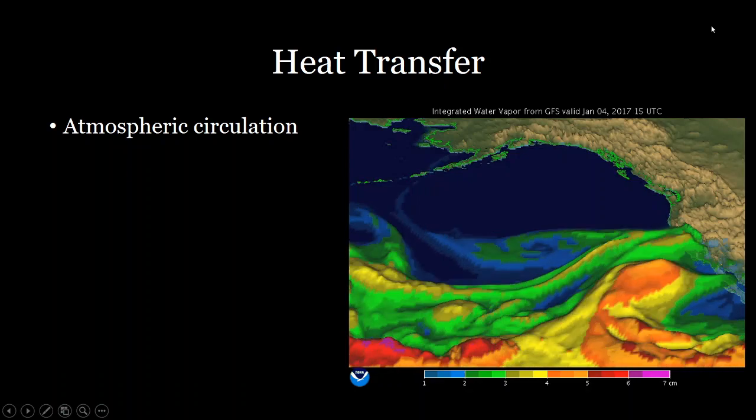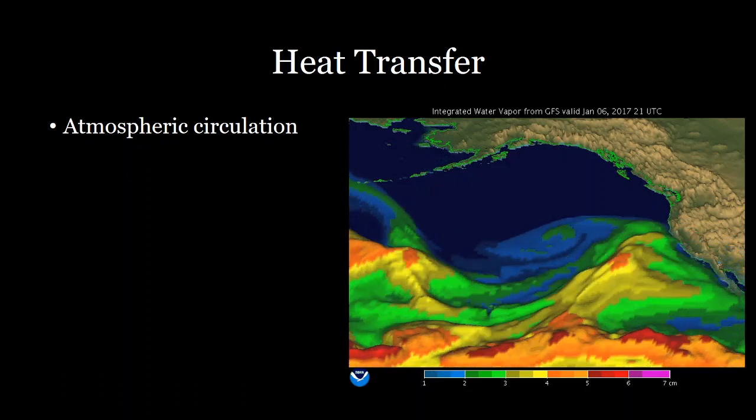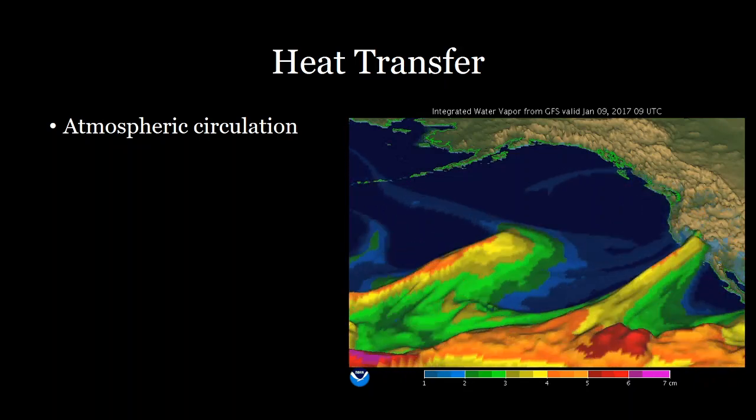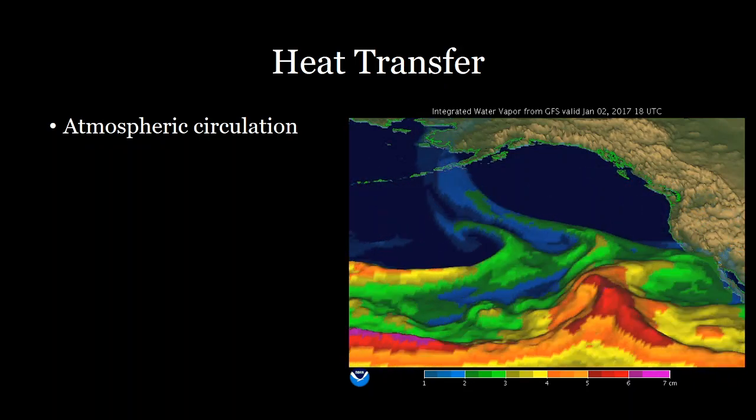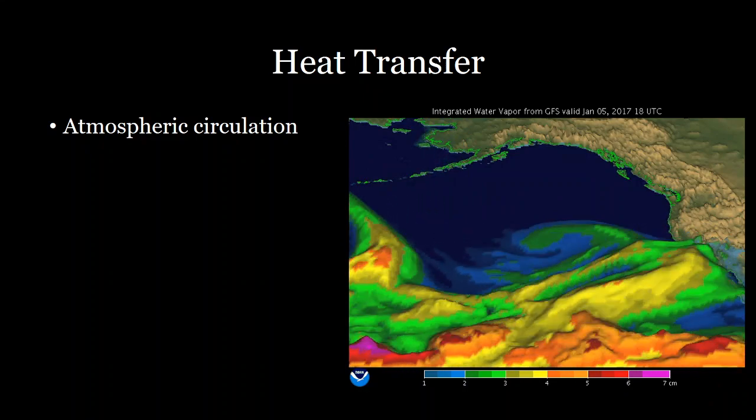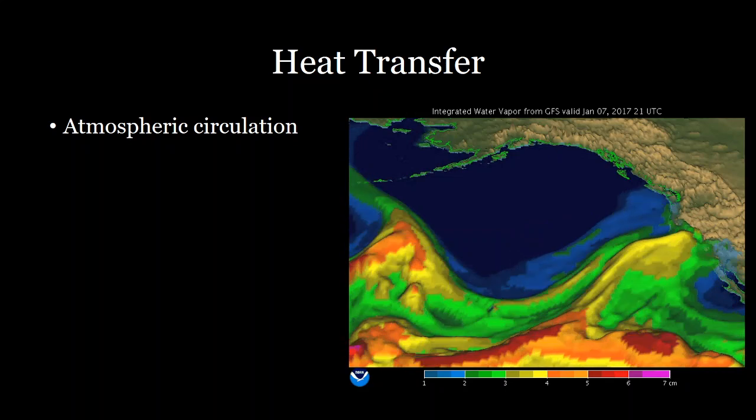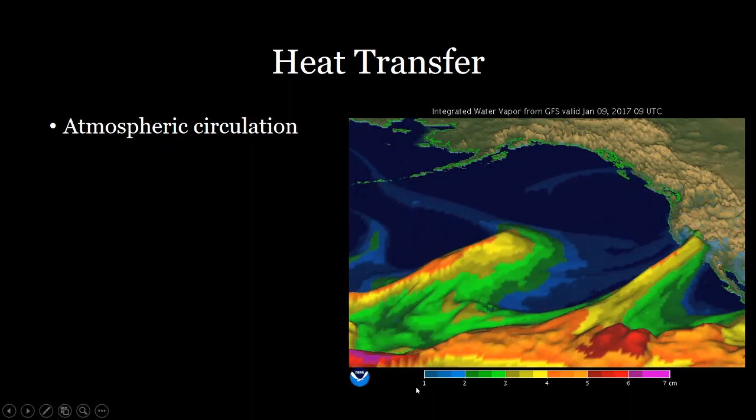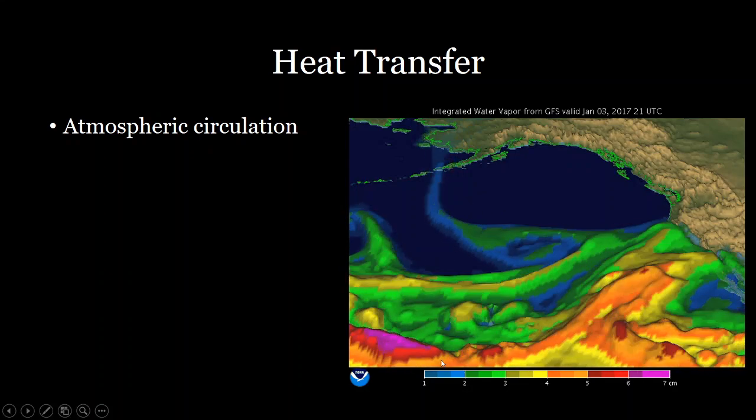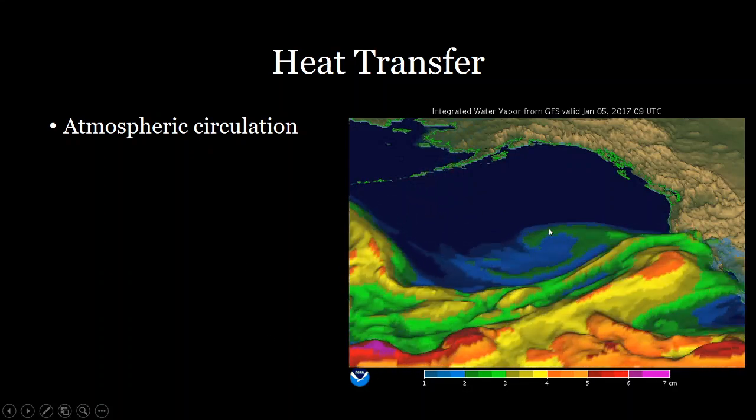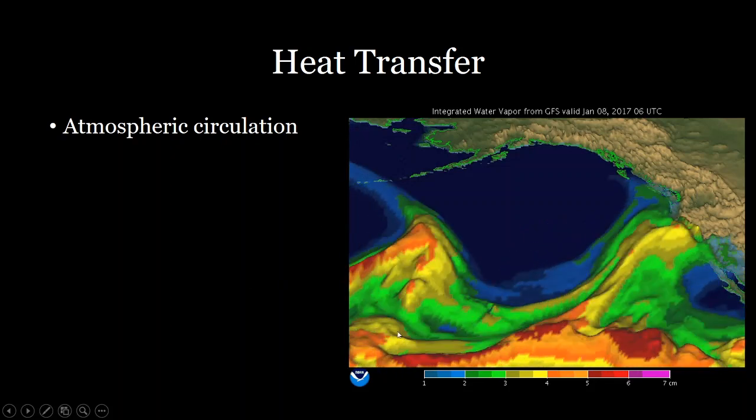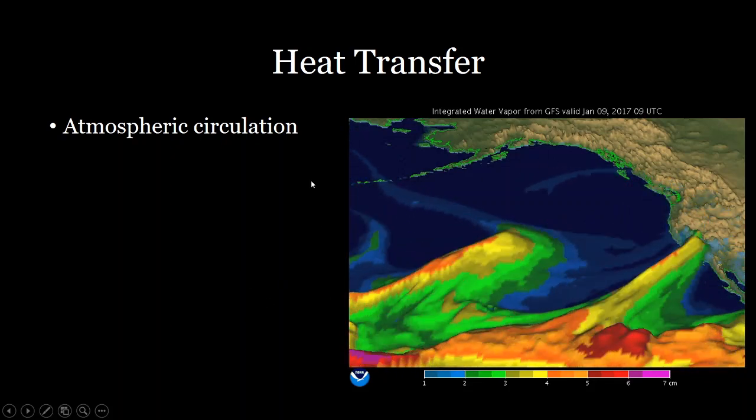Another important concept is heat transfer. So heat transfer is really important for knowing where or how hot different regions of the earth are. And one of the most important ones is atmospheric circulation. You can see that here of this atmospheric front and this what's called atmospheric river moving these moisture in the air around in the atmosphere.